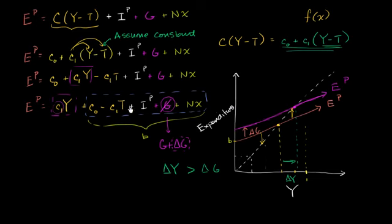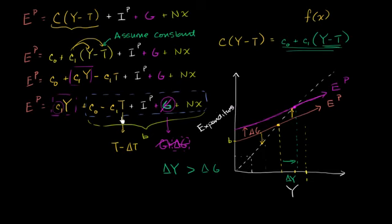If we rewind and go back to our original function — just having our G, back on the original orange planned expenditure line — you could, based on this model, also shift it up by lowering taxes. If you change your taxes to be taxes minus some delta in taxes, the reason this shifts the whole curve up is because you're multiplying the whole thing by negative C1. Since the marginal propensity to consume C1 is positive and there's a negative out front, when you multiply a decrease in taxes (a negative delta T) by that negative, the whole curve shifts up again.